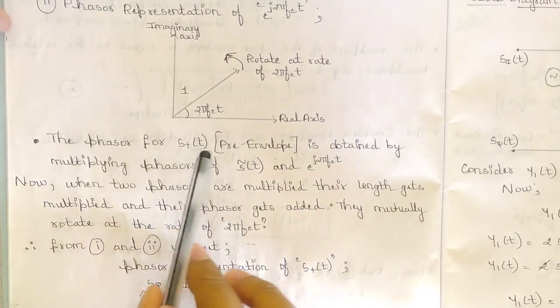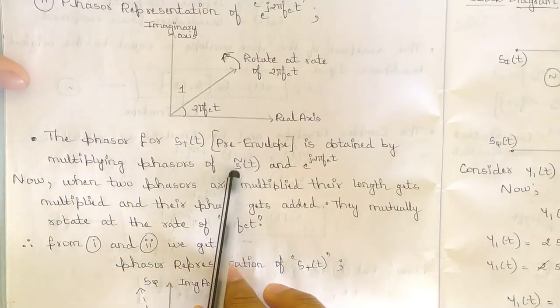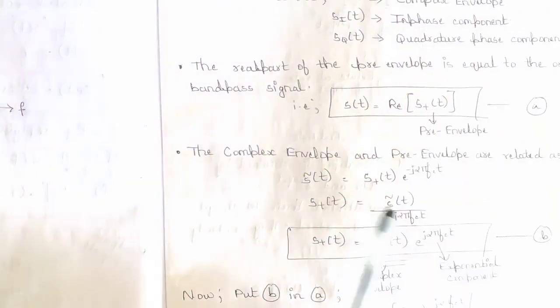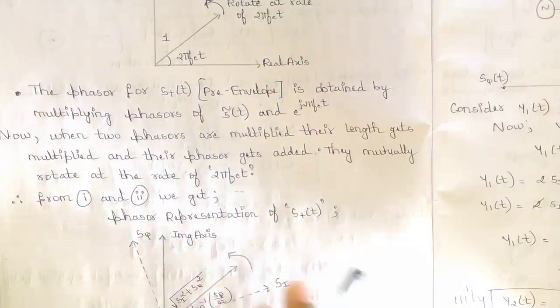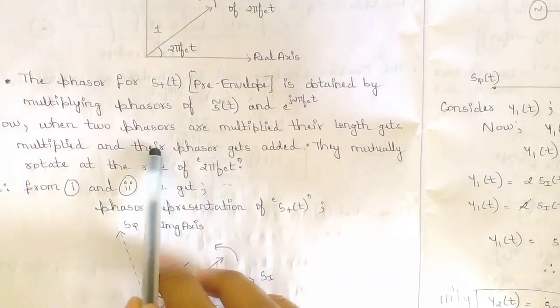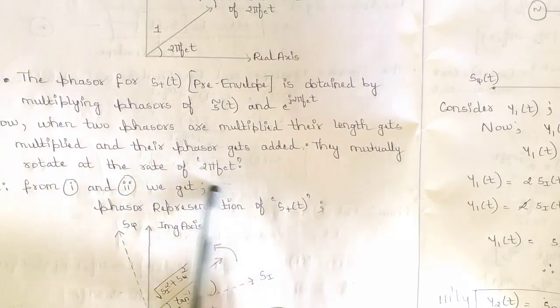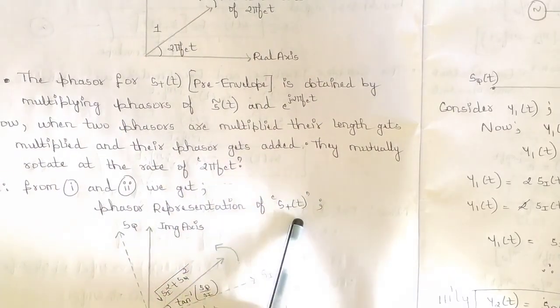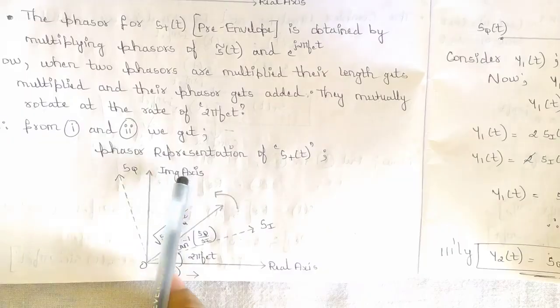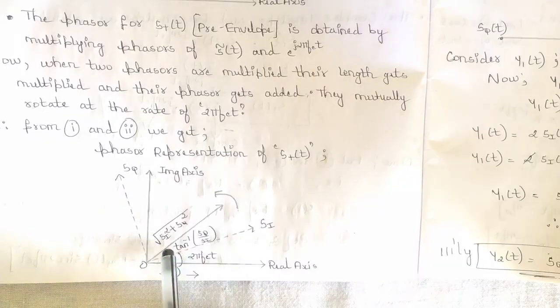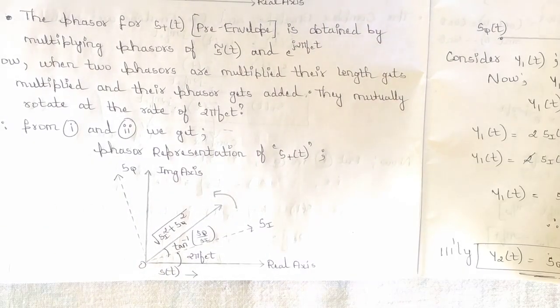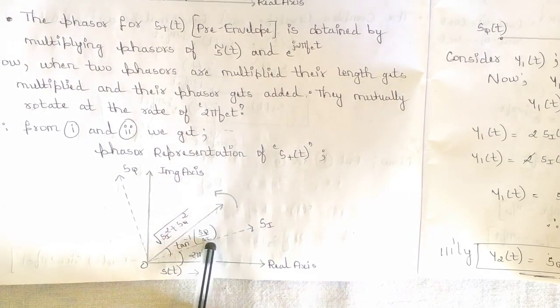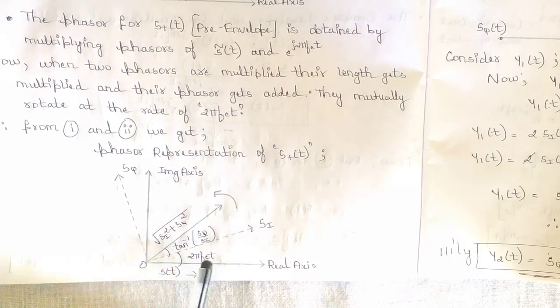The phasor for the pre-envelope s⁺(t) is obtained by multiplying the phasors of s̃(t) and e^(j2πf_c·t), since s⁺(t) = s̃(t)·e^(j2πf_c·t). When two phasors are multiplied, their lengths multiply and their phases add, mutually rotating at 2πf_c·t. The resulting magnitude is √(s_i² + s_q²) and the total phase is tan⁻¹(s_q/s_i) + 2πf_c·t.